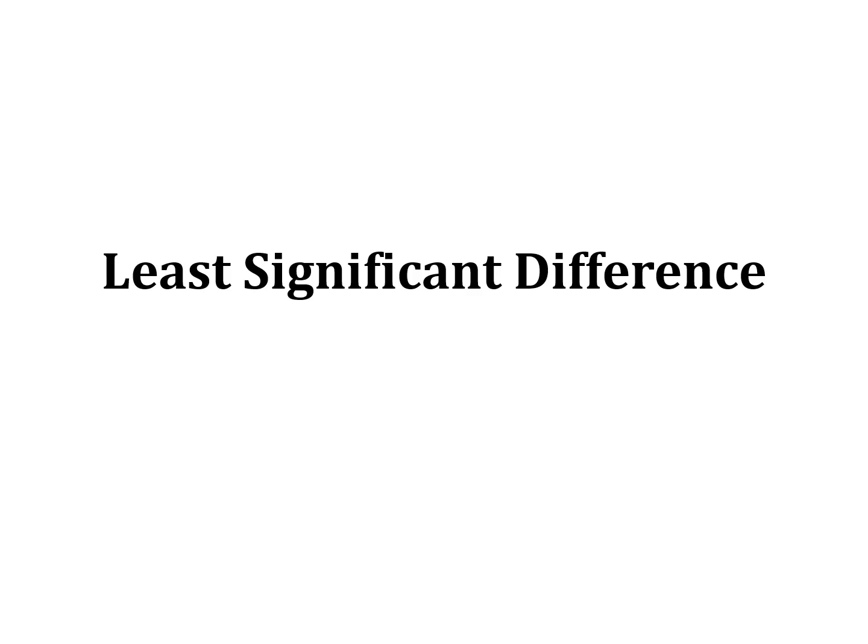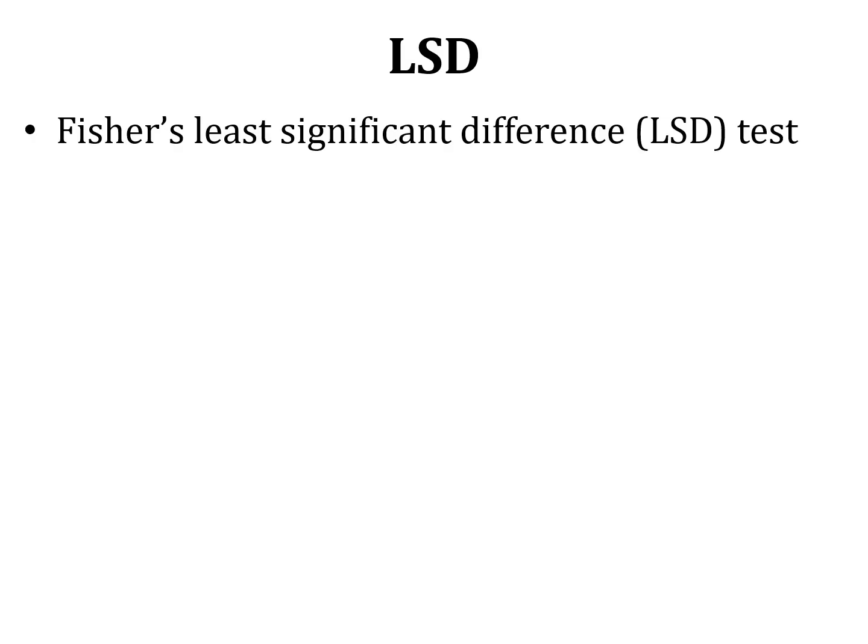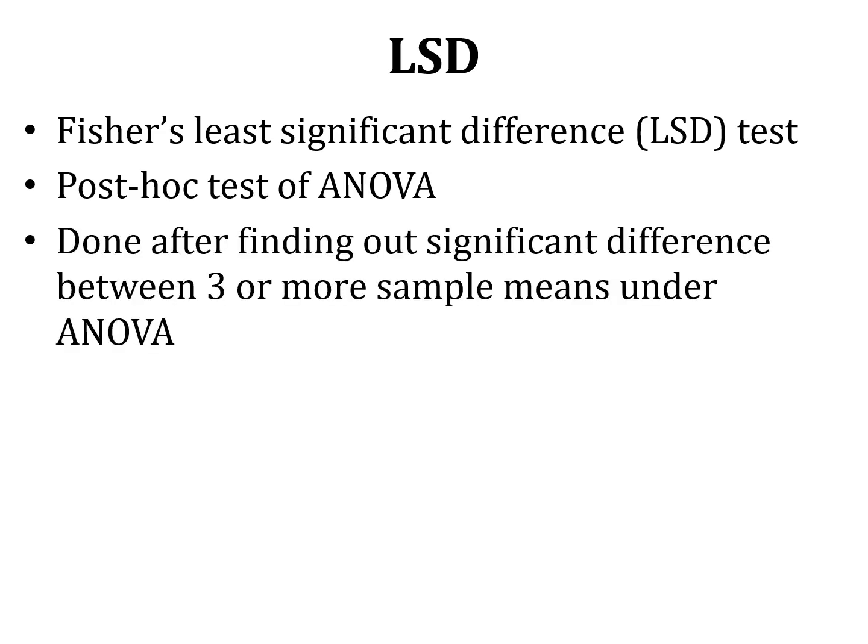In the previous lecture we discussed the concept of post hoc tests and why post hoc tests of ANOVA are needed. Least significant difference is a post hoc test of ANOVA developed by Fisher in 1935, which is why it is known as Fisher's least significant difference test. This is a post hoc test of ANOVA performed after finding a significant difference between three or more sample means.